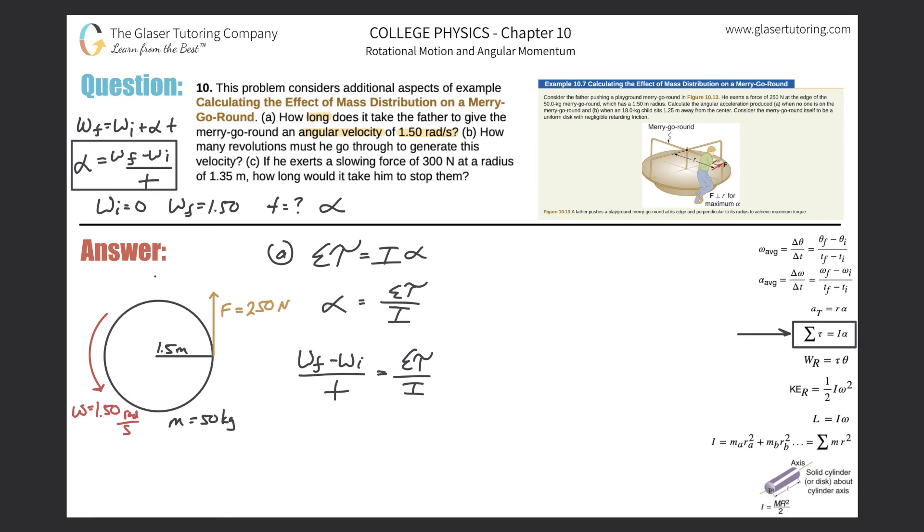Solving this thing for time now, we would get a moment of inertia multiplied by the final velocity minus the initial velocity all divided by then the sum of the torques, and that will equal the time. Just cross multiplication, moving some variables around. Now what I'm going to do is expand on the moment of inertia and the torque. So time will now simply be the mass multiplied by the radius squared all over two.